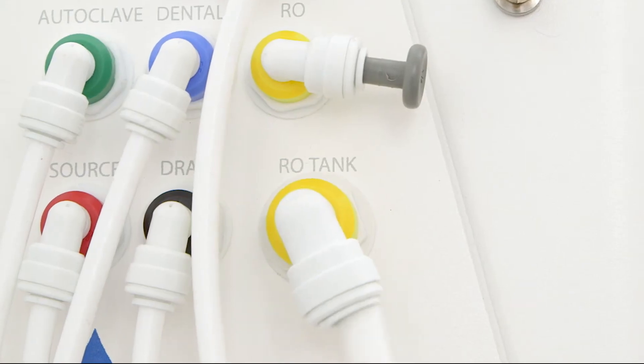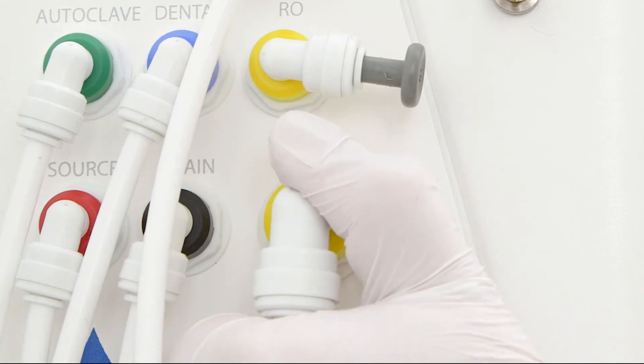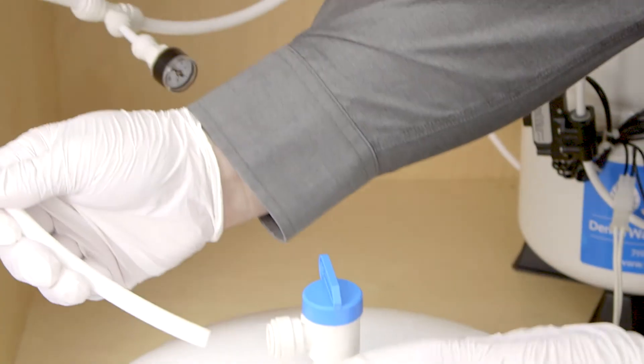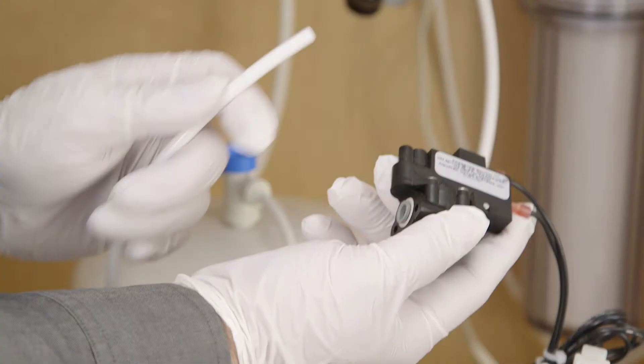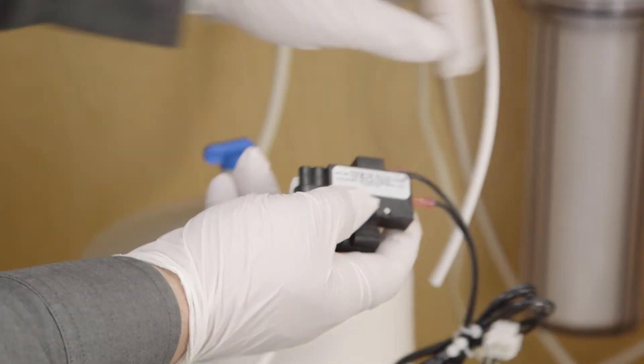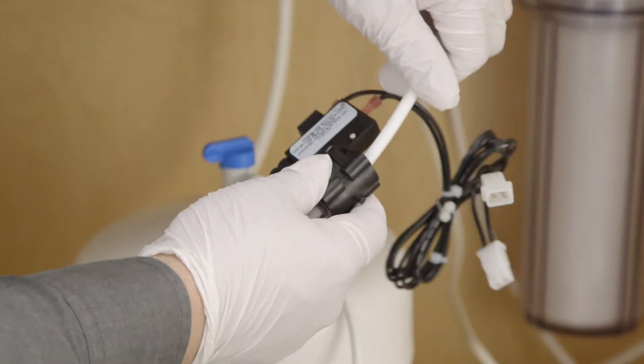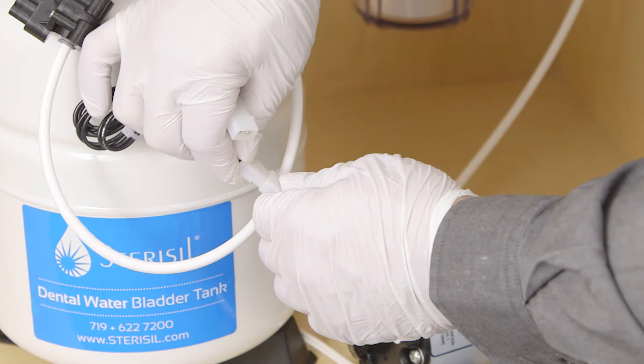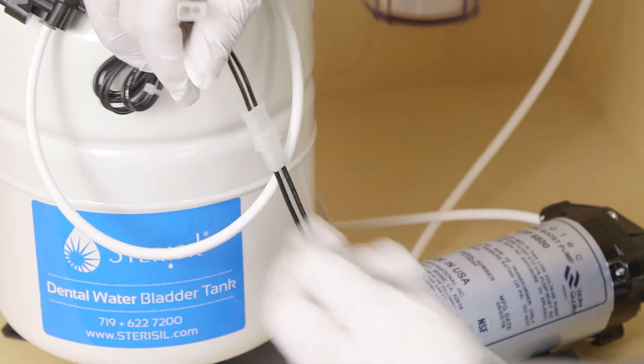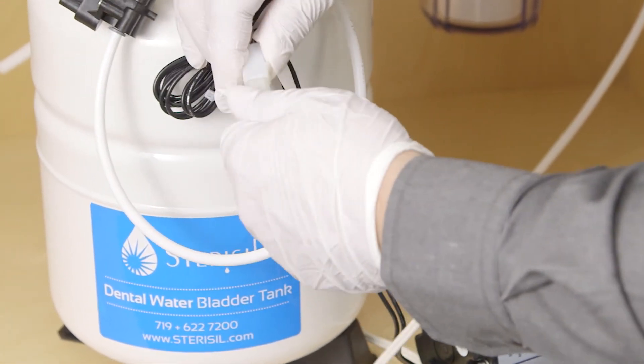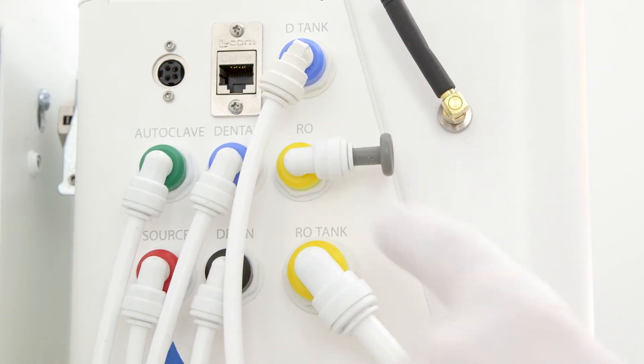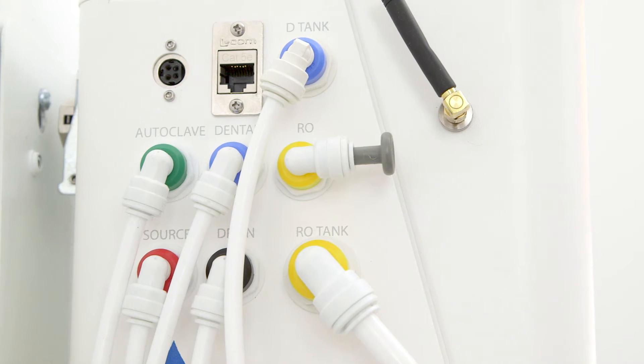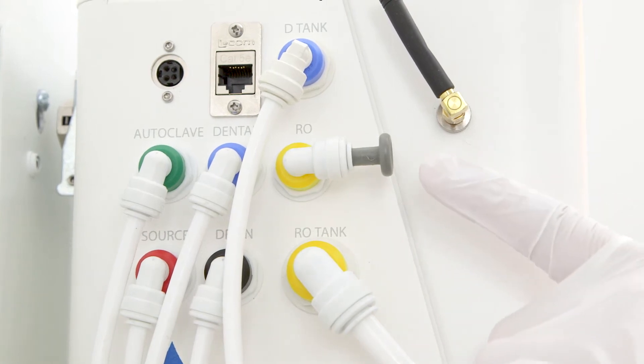RO tank port. Run a 3/8 inch line from the RO tank port on the system to the 3/8 inch tank ball valve on the RO water storage tank. The pressure switch for the booster pump must be installed on this section of tubing. Make sure you have enough length on the power cable to reach between the pump itself and the section of tubing with which you intend to merge the pressure switch. You'll now be left with a yellow RO port. If no auxiliary reverse osmosis water will be used, then this port should remain plugged.